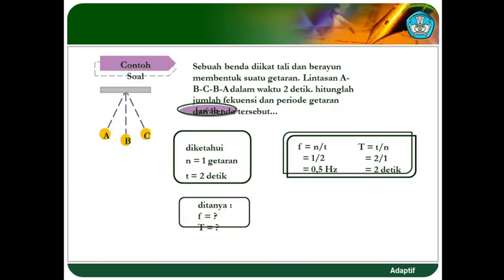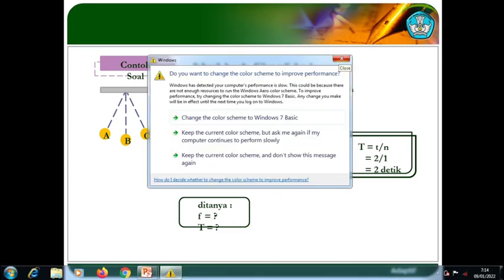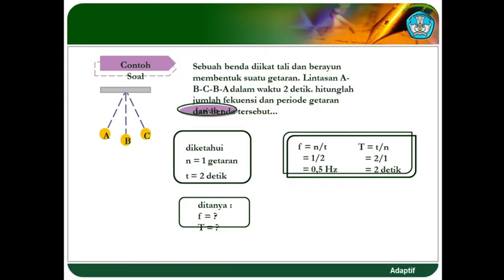Ini ada contoh soal. Sebuah benda diikat dengan tali dan berayun membentuk suatu getaran. Lintasannya A, B, C, B, A dalam waktu dua sekon. Hitunglah frekuensi dan periode getaran dari benda tersebut. Diketahui jumlah getarannya adalah satu getaran, waktu yang dibutuhkan adalah dua sekon. Ditanyakan frekuensi dan periodenya. Frekuensi adalah jumlah getaran per satuan waktu, berarti N per T, yaitu 1/2 atau 0,5 hertz. Kemudian periode adalah T per N sama dengan 2 per 1 atau dua detik.